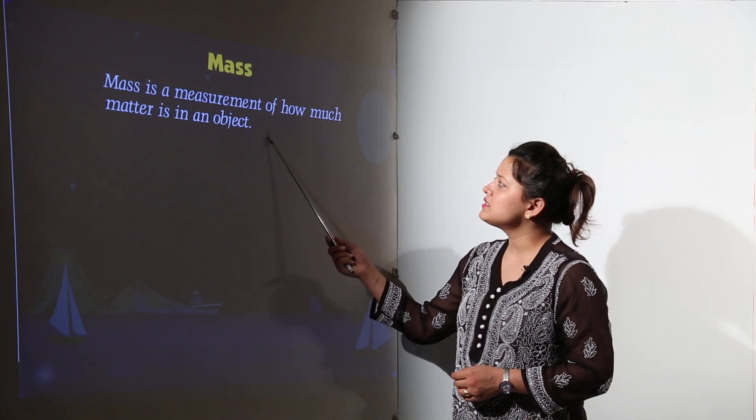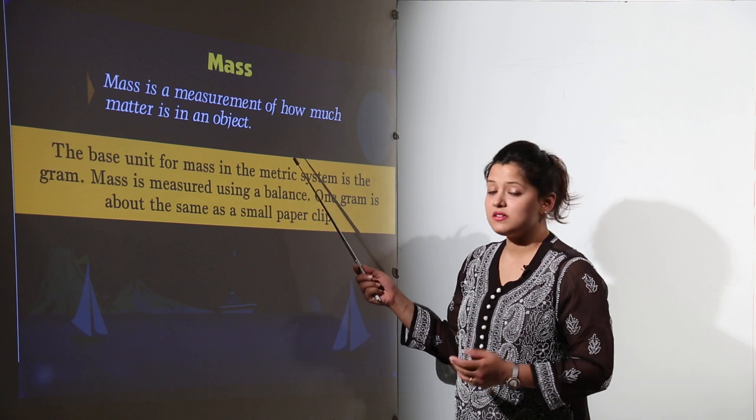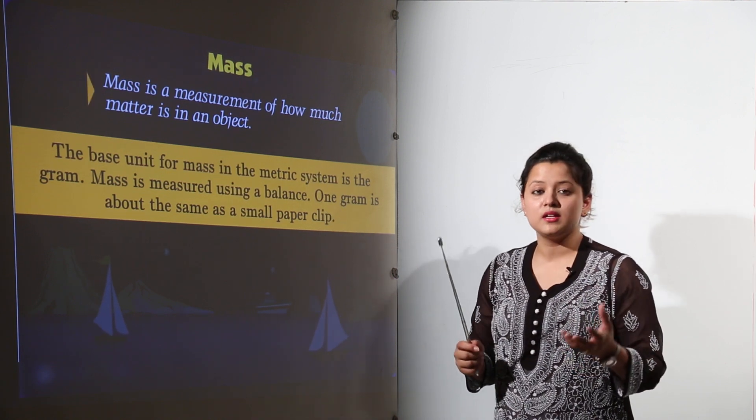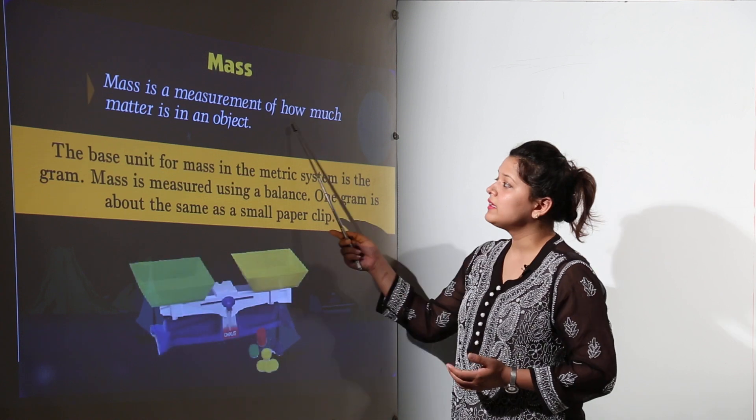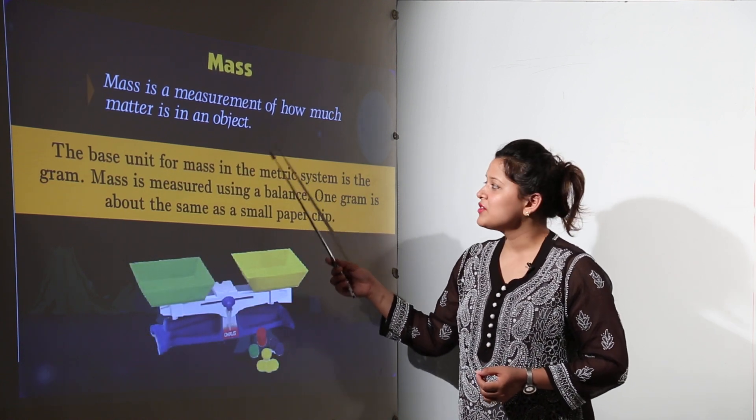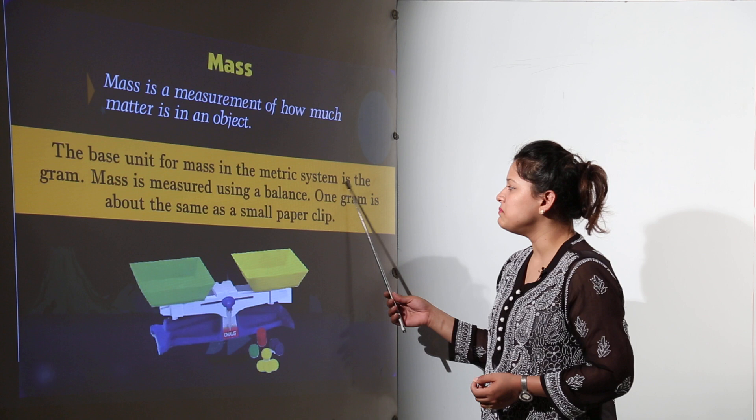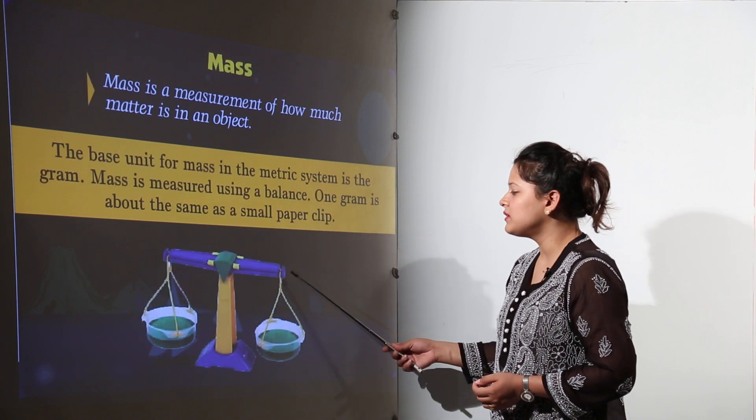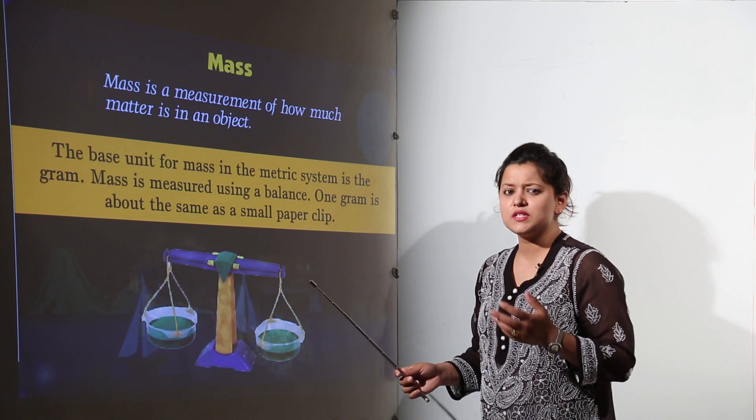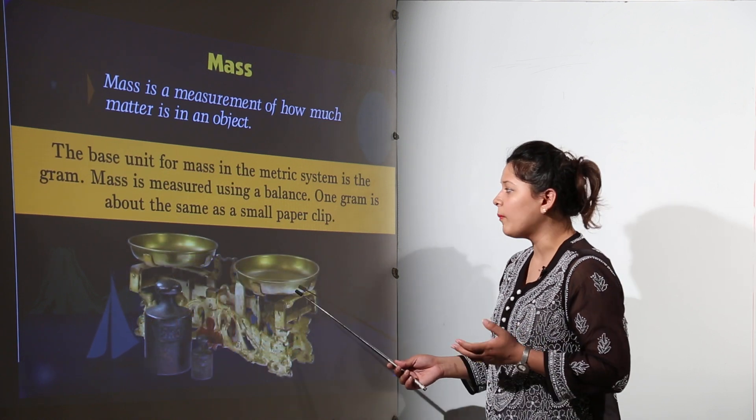The mass is the measurement of how much matter is in an object. An object is having how much of matter that will be its mass. So the base unit for mass in metric system is grams and it can be measured on the balance. We can observe it with the vegetable sellers these days most commonly.